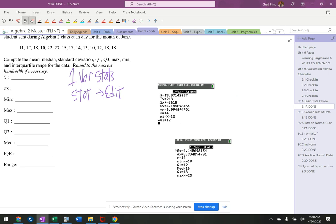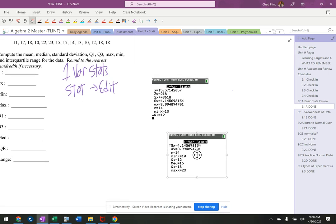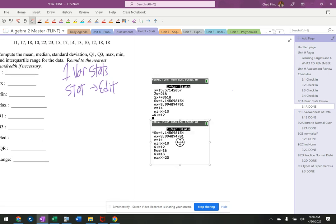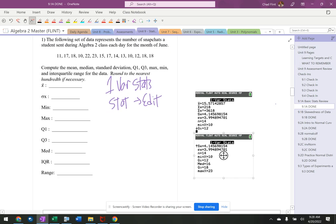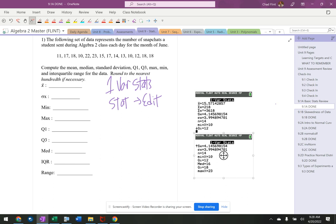All right, so if you didn't get these numbers, that means you entered in a number incorrectly, or you don't have enough. All right, and it has all the numbers that I need right in there. So X bar, it says round to the nearest hundredth. X bar, that's the mean. So you can see that that's 15.57.